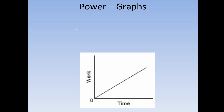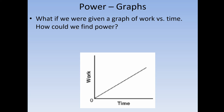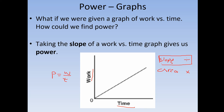The last thing to talk about is graphs. If you have a graph of work versus time, how would we find the power? We have two choices: slope or area. Slope uses division and area uses multiplication. Since power is work divided by time — you're dividing the y-axis by the x-axis — that means we use slope. So taking the slope of the graph is what gives us the power.